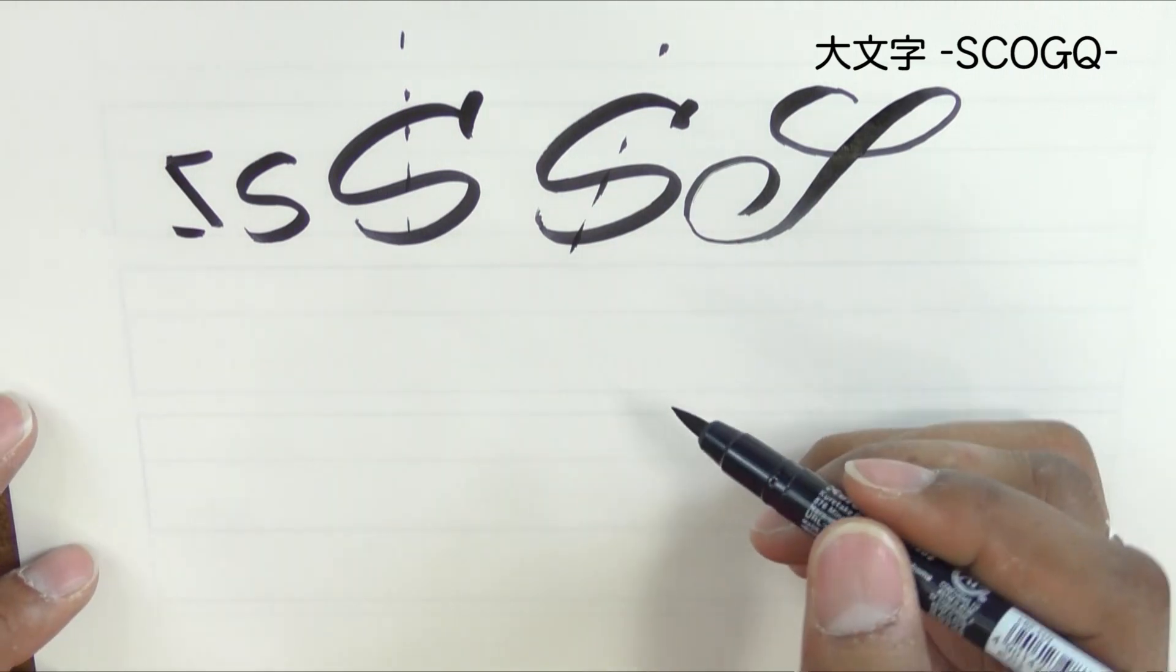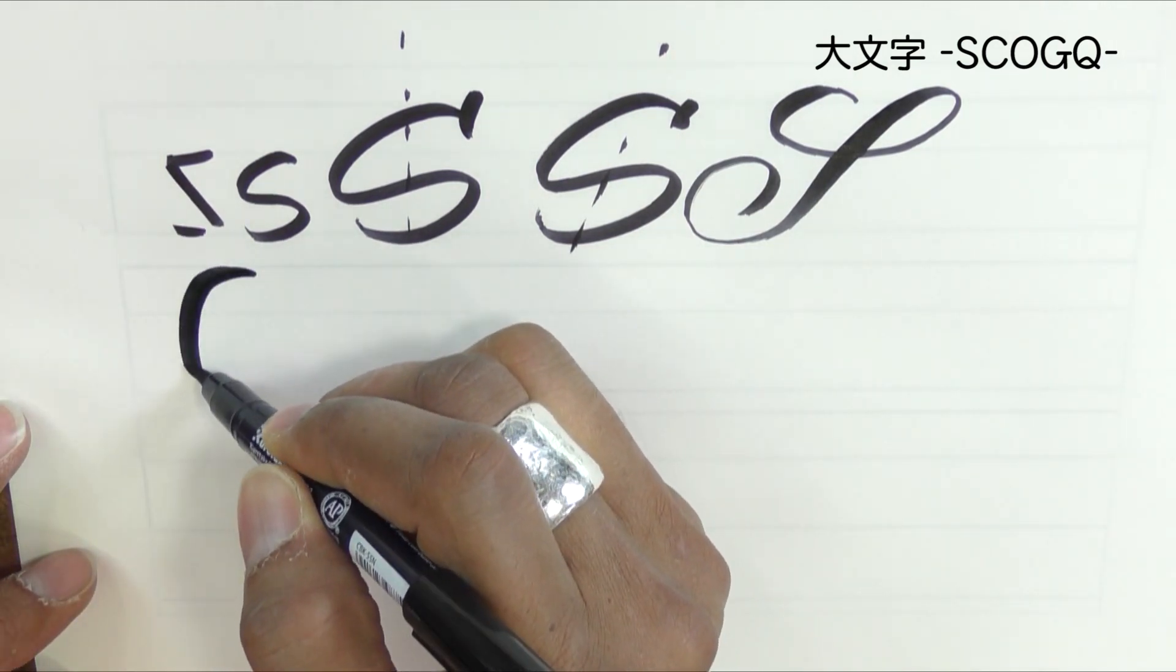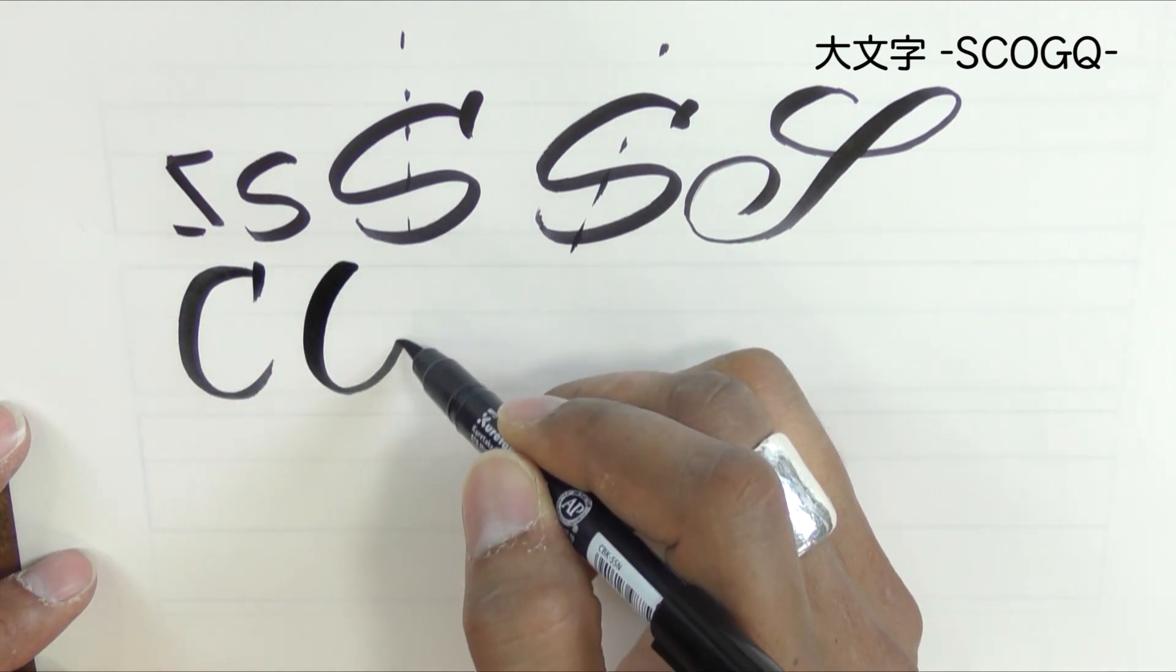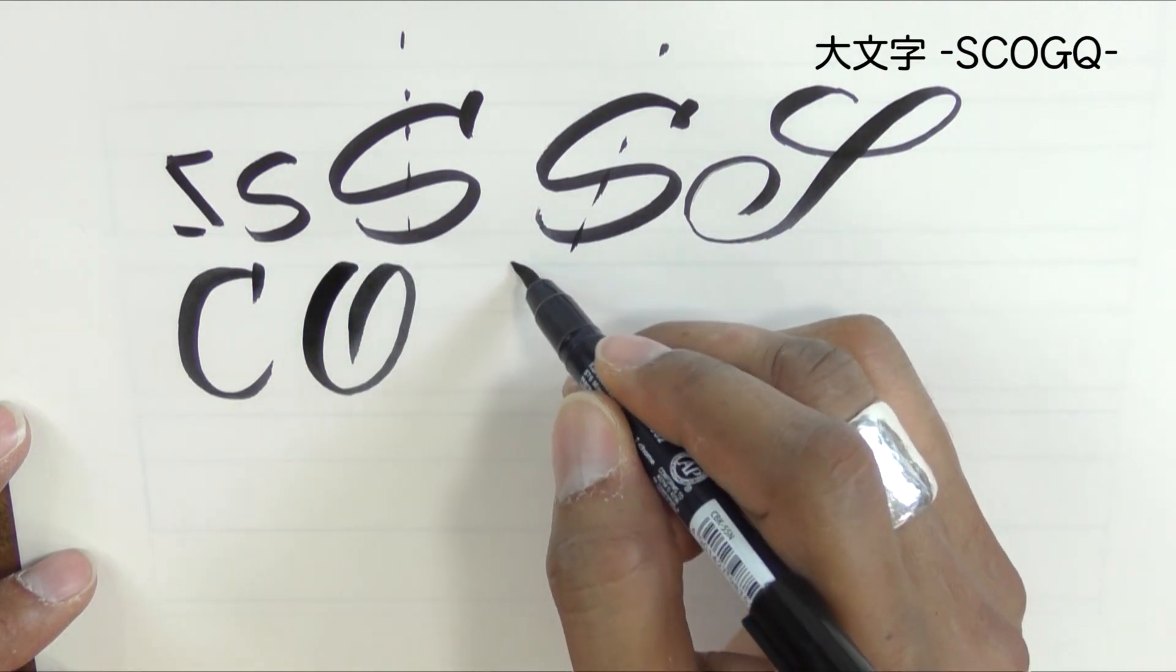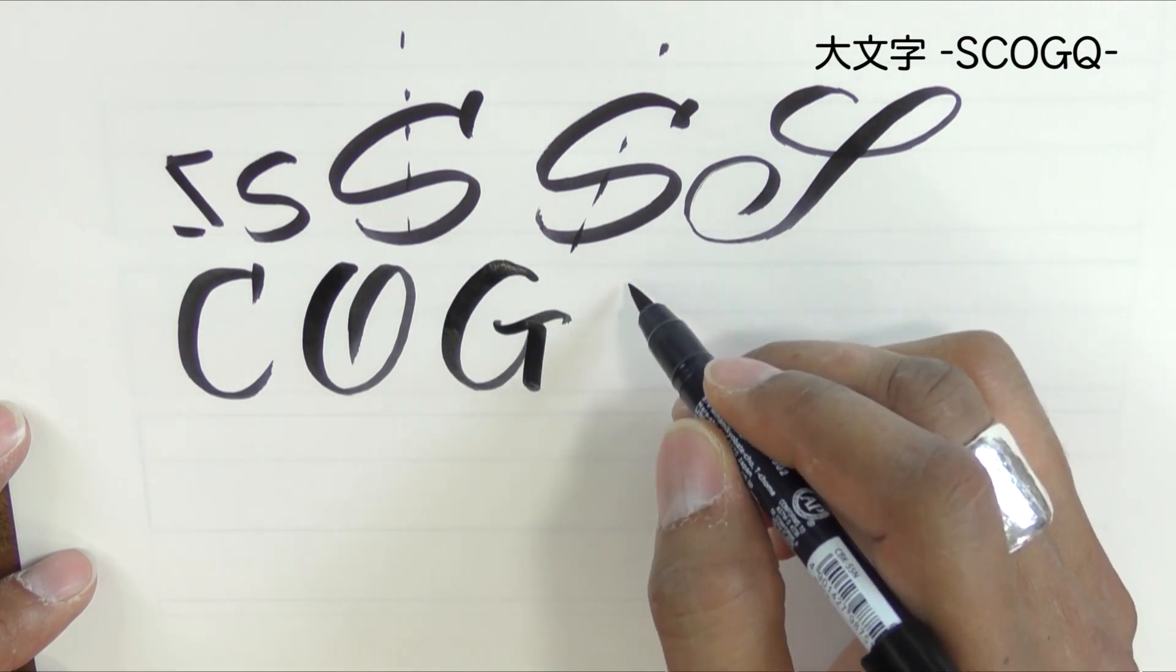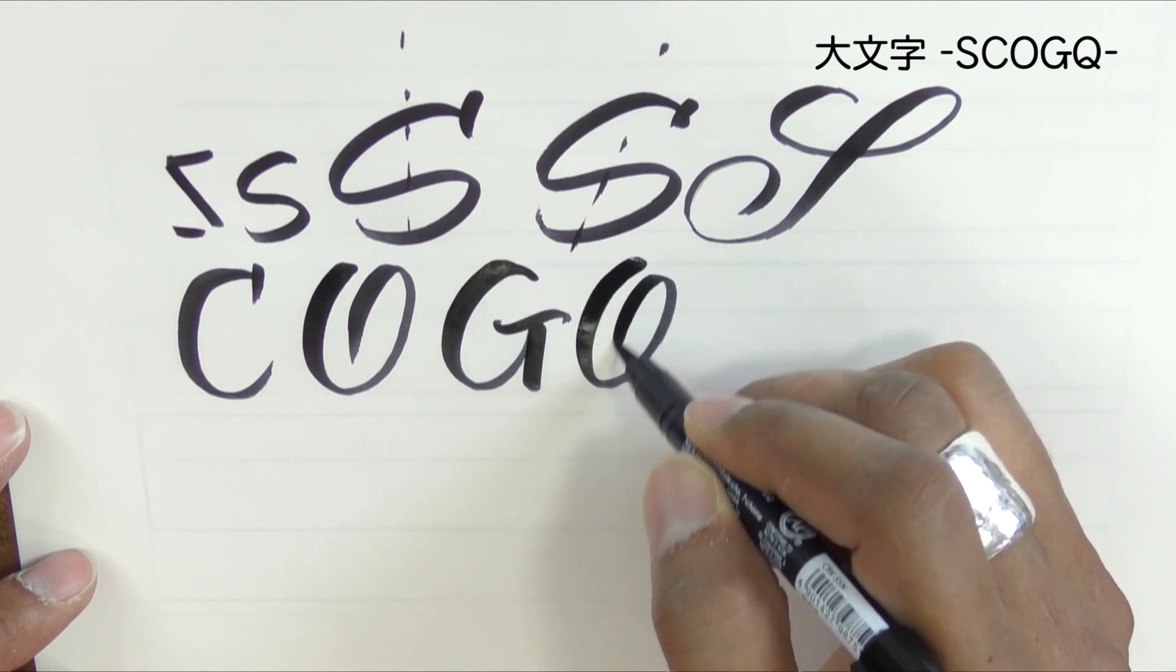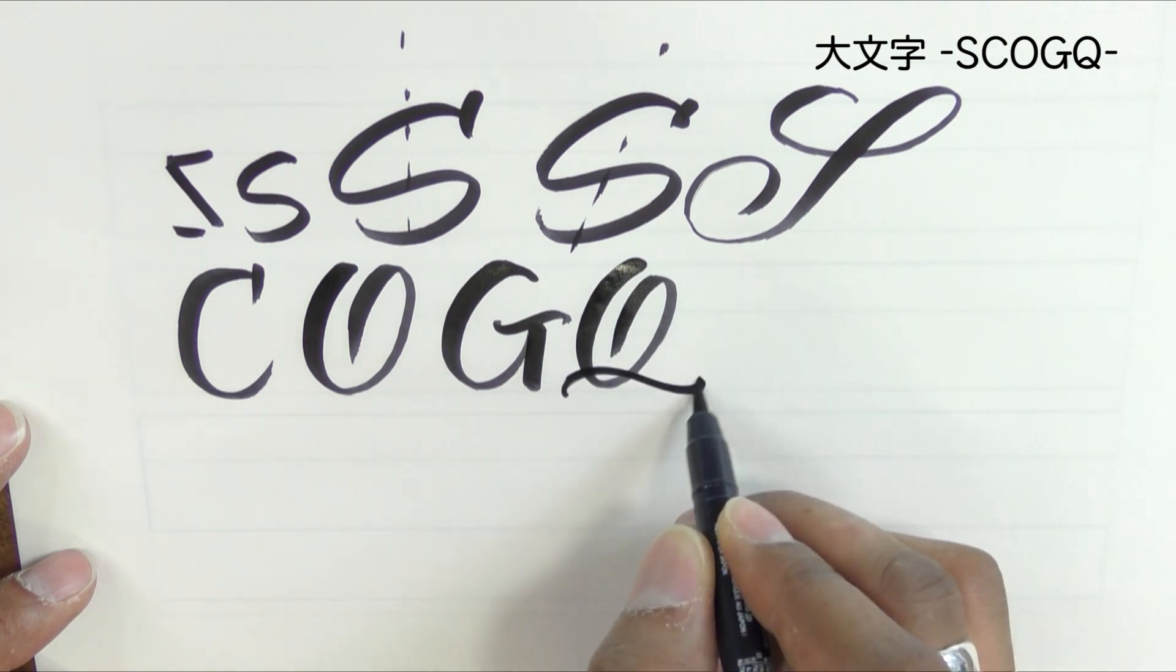Next we look at the C, the O and the G. Notice I'm using a combination of finger and wrist movement. Sorry, the C, the O, the G and the Q.